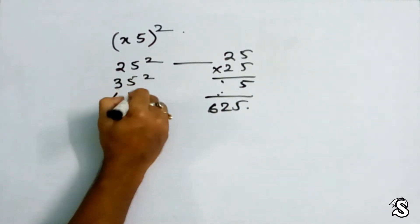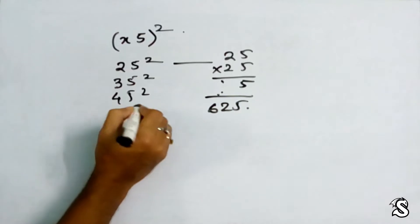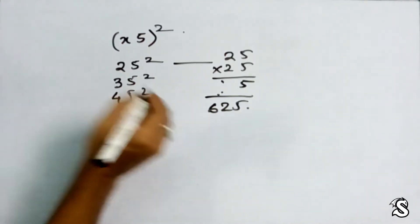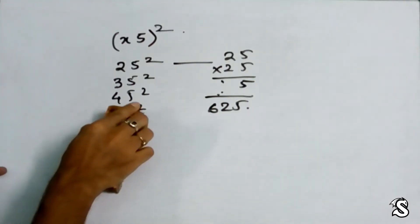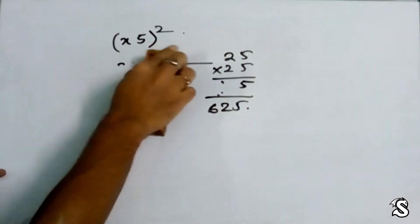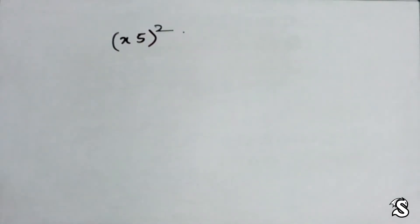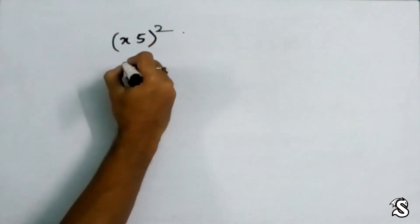Moreover, you can memorize 25 square, 35 square, 45 square, 55 square. But what happens if you forget during the exam or when it's really required for solving a question? So there is a technique for finding it.